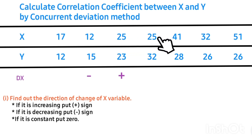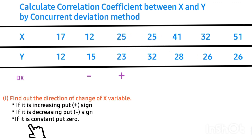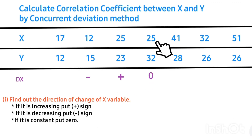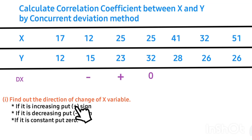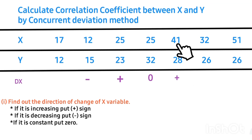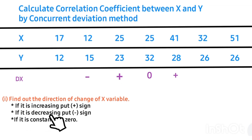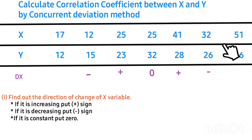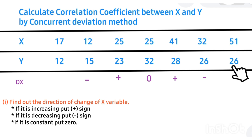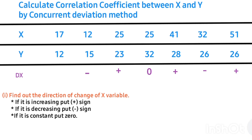Continuing with Step 1: comparing 25 and 25 — the value remains constant, so we put zero. Comparing 25 and 41 — there is an increase in value, so we put a plus sign. Comparing 41 and 32 — there is a decrease in value, so we put a minus sign. Finally, comparing 32 and 51 — there is an increase in value, so we put a plus sign. We have now found the direction of change for the X variable.